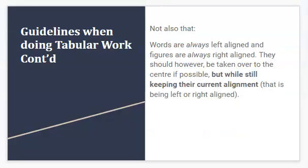And finally, we should note that words are always left aligned and our figures are always right aligned. They should, however, be taken over to the center if possible, but while still keeping the current alignment — that is, left or right aligned. So we should not highlight the figures or the words and press center alignment, as that is incorrect. Our words should always be kept to the left and our figures to the right, and then we use the alignment icon to take them over to the center.